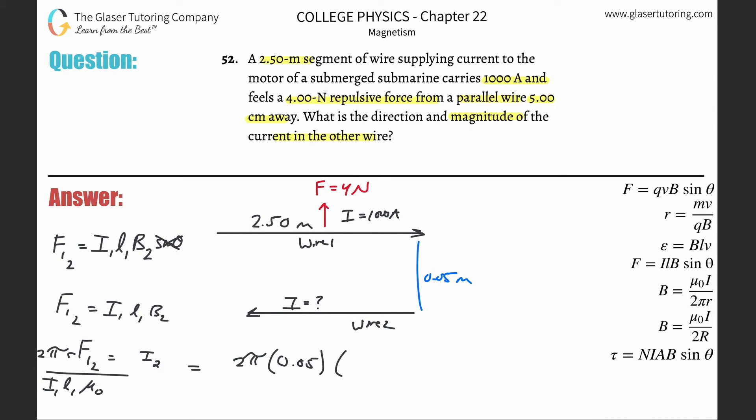Times the force acting on the first wire produced by the second, which they told us was 4 newtons, then all divided by the current flowing in that first wire, which was going to be 1000 amps, and times now the length of that wire, which was 2.5 meters, and times the permeability of free space, which is just simply 4π times 10 to the minus seventh. And that's now going to equal your I₂.